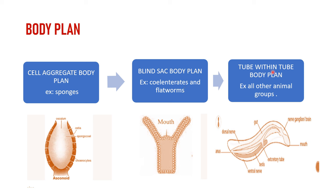The tube within tube body plan is present in other animal groups. Here there is a particular organ for each particular function — ingestion from the mouth, full process of digestion in the gut, and excretion from the anus. There is an epithelial layer lining the tube.